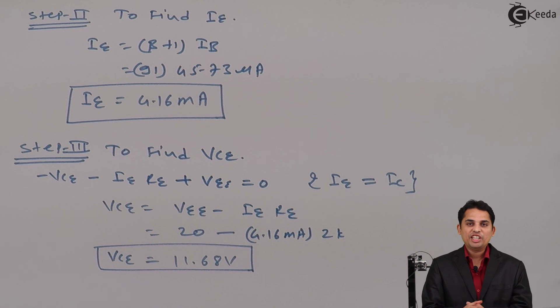So value of VCE is equal to 11.68 volts. So Q-point of the circuit becomes 11.68 volts comma 4.16 milli amperes. Thank you.